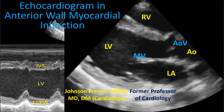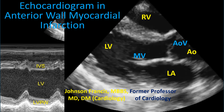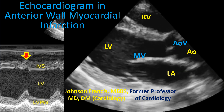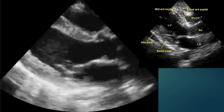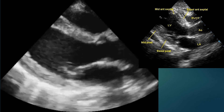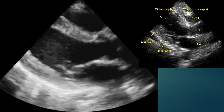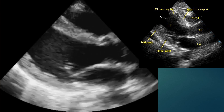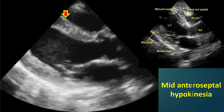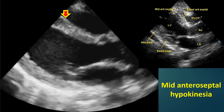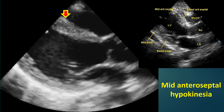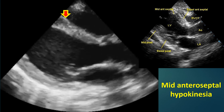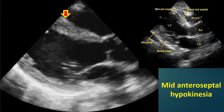M-mode echo shows poor contractions of the interventricular septum. Parasternal long axis view showing hypokinesia, or reduced contraction, of the mid anteroseptal segment of the left ventricular myocardium. This is due to anteroseptal myocardial infarction.